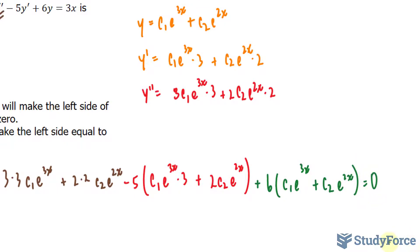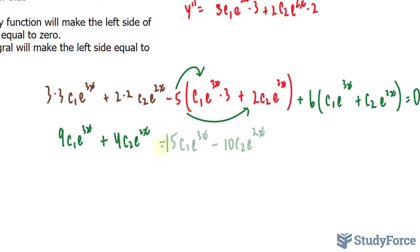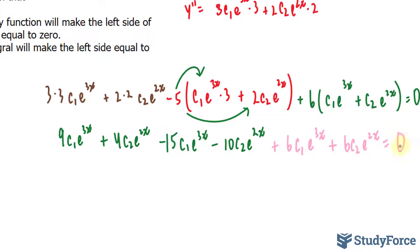Let's see what happens. This becomes 9c1·e^(3x). Multiplying negative 5 into the y prime terms gives us negative 15c1·e^(3x) — from negative 5 times 3 — and negative 10c2·e^(2x) — from negative 5 times 2. Similarly, multiplying out the 6 gives us 6c1·e^(3x) plus 6c2·e^(2x), and this is all equal to 0.